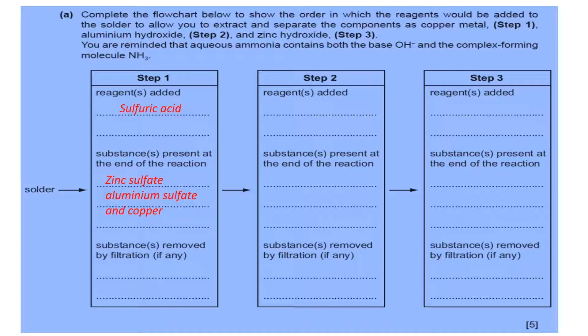The second step, we can use excess ammonia. The excess ammonia reacts with zinc ion and makes zinc tetramine, but aluminum hydroxide precipitate forms. This aluminum hydroxide precipitate can be separated by filtration.